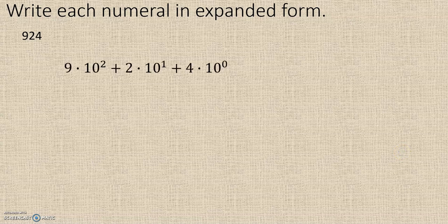9 times 10 to the second — remember, 10 to the second is 100, so that gives us 900. 10 to the first is 10, so 2 times 10 is 20. And 4: 10 to the 0 is 1, so it's just 4. That is the expanded form of 924: 9 times 10 squared, plus 2 times 10 to the first, plus 4 times 10 to the 0.